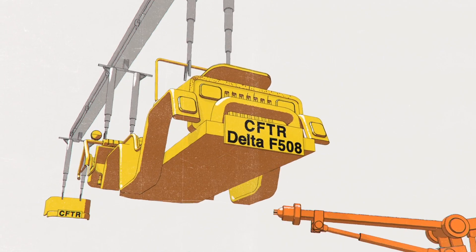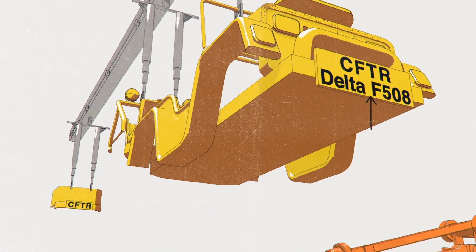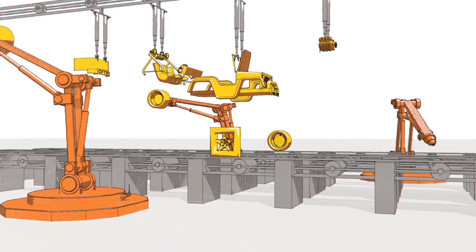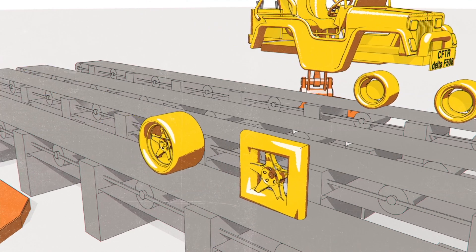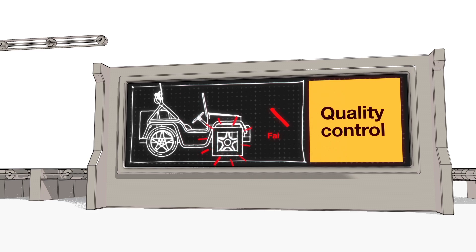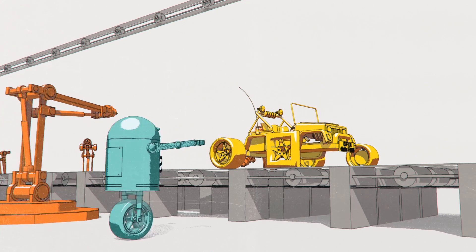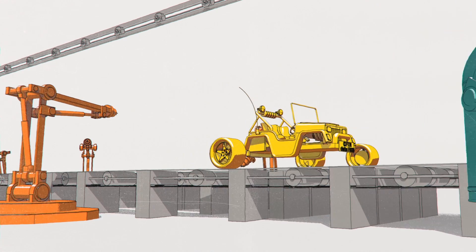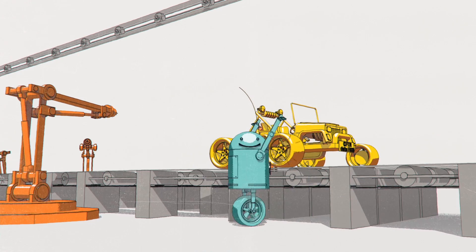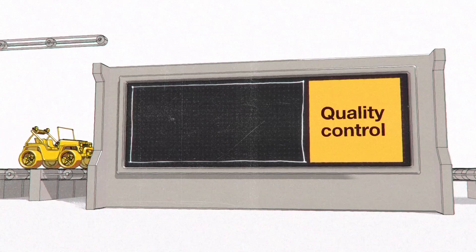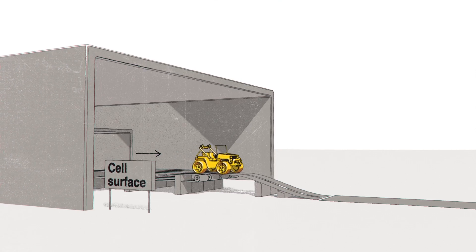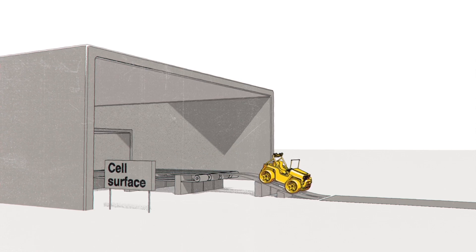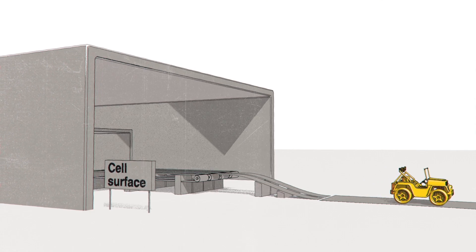If you have a class 2 mutation like Delta F508, the assembly line will roll along as normal but the protein can't be formed properly, so it won't pass quality control. An SMI called a corrector, like Orkambi, is designed to target this fault. This corrects the mistake in the blueprint so the protein can be properly formed and pass quality control. At this point, the protein is shipped off to the surface of the cell like a new car leaving the factory.